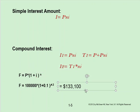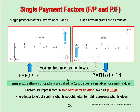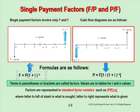Conversely, if you want to find P given F, i, and n — for example, if you want to have one hundred thirty thousand in the future at 10% interest, how much do you deposit now? — you can rearrange the formula. Most formulas can also be represented using factor notation, which we will discuss.